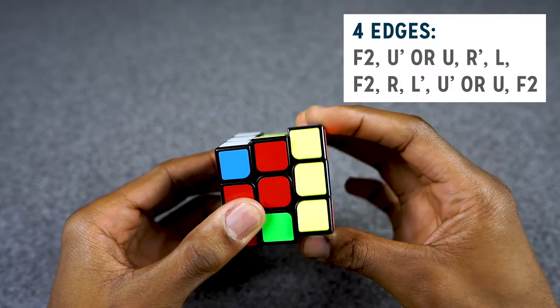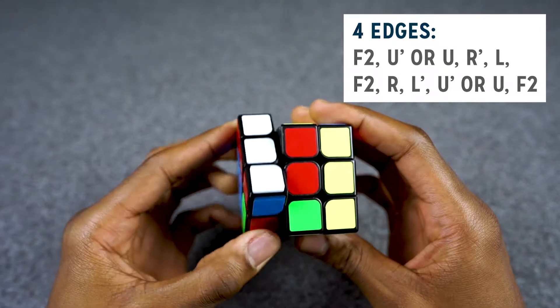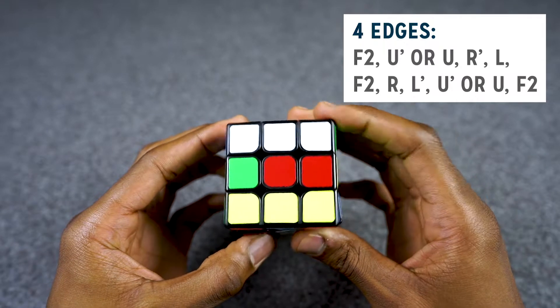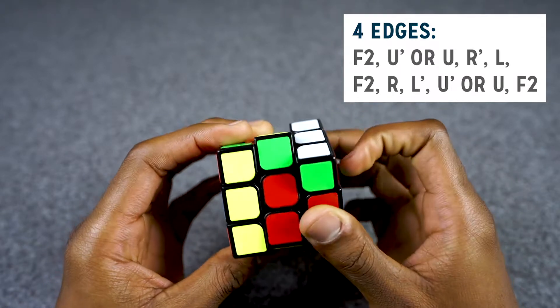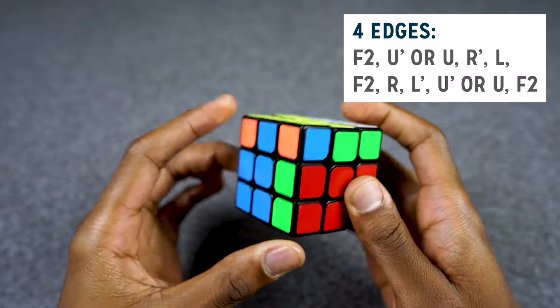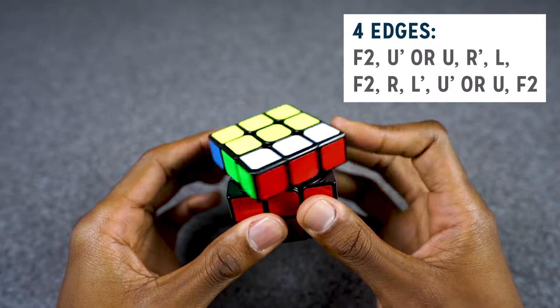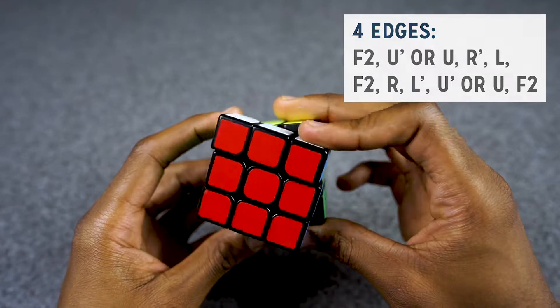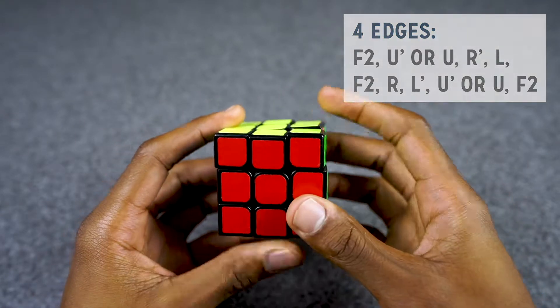R prime, L, F2, R, L prime—oh sorry—L prime, and U, F2. Notice we finished with a U because we started with a U.